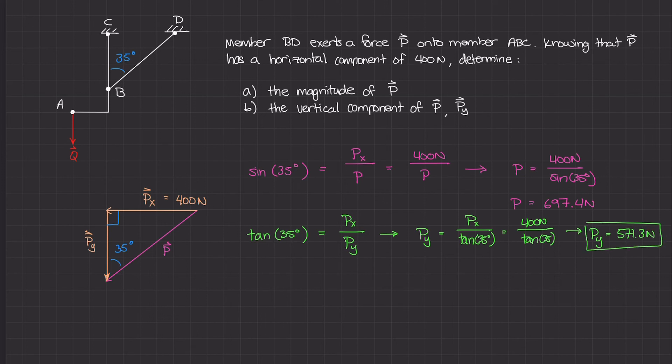The second way uses cosine. Looking at this triangle, if we take cosine of 35 degrees, cosine is adjacent over hypotenuse. The adjacent is Py, the hypotenuse is P, which we figured out in the previous part as 697.4 newtons.